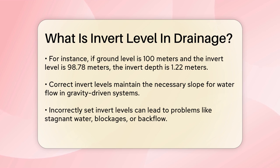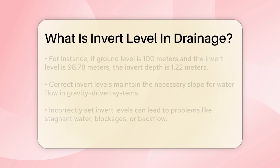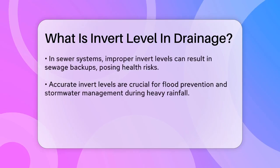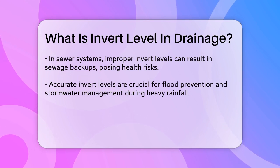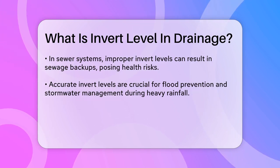Proper invert levels also help in preventing flooding and managing stormwater. During heavy rainfall, the system needs to handle sudden surges in water. If the invert levels are not correctly set, water can accumulate and cause flooding. In stormwater systems, accurate invert levels ensure that rainwater runoff is managed efficiently, preventing water from collecting in unwanted areas.